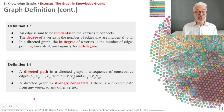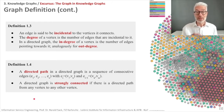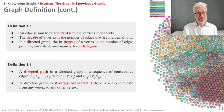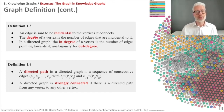Let's look at some properties of graphs. An edge in a graph is said to be incidental to the vertices it connects. The degree of a vertex is the number of edges incidental to it. In a directed graph, we distinguish between the in-degree — the number of edges pointing towards the vertex — and the out-degree — the number of edges going out from that vertex.